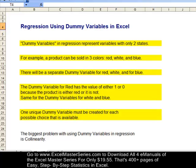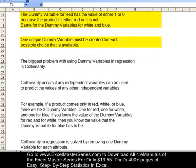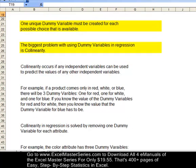Now, the biggest problem with using dummy variables in regression is called collinearity or multicollinearity. Collinearity occurs if any of the independent variables can be used to predict the value of any of the other independent variables.